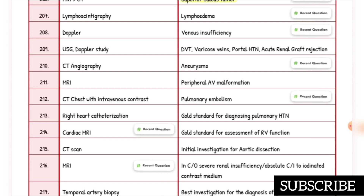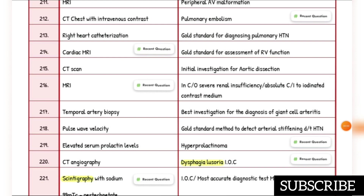Investigation of choice for pulmonary embolism is CT chest with intravenous contrast — recent question. Gold standard for diagnosing pulmonary hypertension is right heart catheterization. Gold standard for assessment of RV function is cardiac MRI — recent question. Initial investigation for aortic dissection is CT scan.